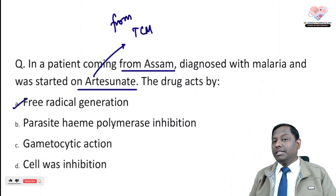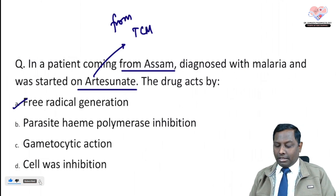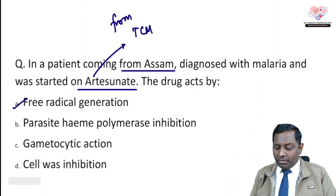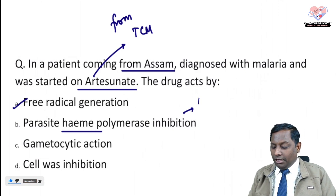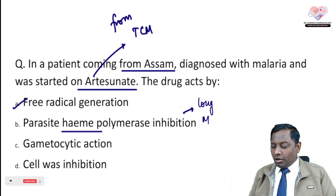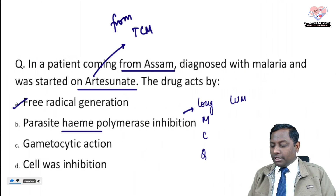The mechanism of artesunate involves free radical generation that is toxic for the parasite. It is also a parasitic heme polymerase inhibitor. Remember: the word 'heme' sounds like blood — that's the mnemonic to remember heme polymerase inhibitor drugs.